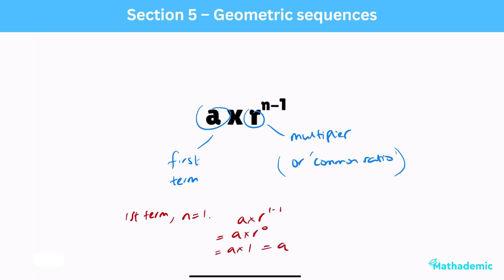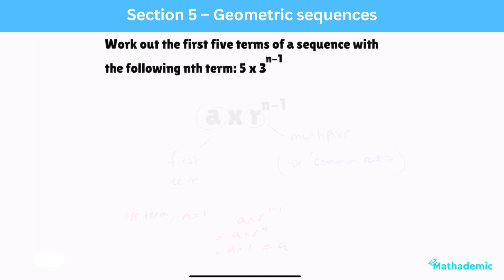Here are some questions involving geometric sequences. First up, work out the first 5 terms of a sequence with the following nth term: 5 times 3 to the power of n minus 1. So, start with the first term, let n equal 1. This will always simplify to the a component, which in this case is 5. Then, the second term, where n equals 2, will be 5 times 3 to the power of 2 minus 1. This simplifies to 5 times 3, since 3 to the 1 is just 3, and gives us a second term value of 15. You can see that the common ratio going forward will be to keep on multiplying by 3. So, the following 3 terms will be 45, 135, and 405.